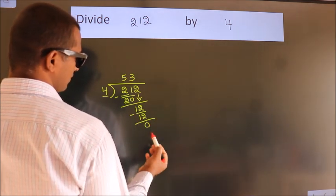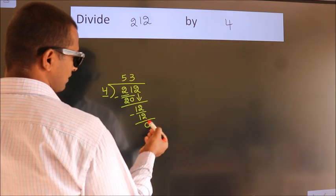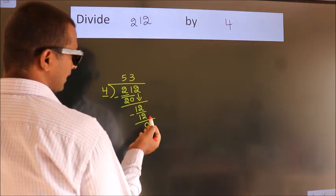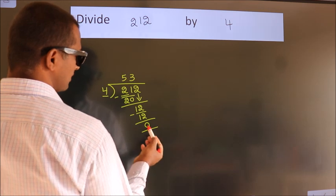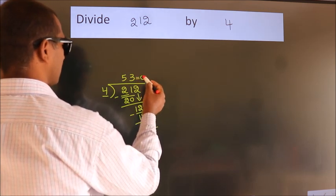We get 0. After this, no more numbers to bring it down. And we got remainder 0. So this is our quotient.